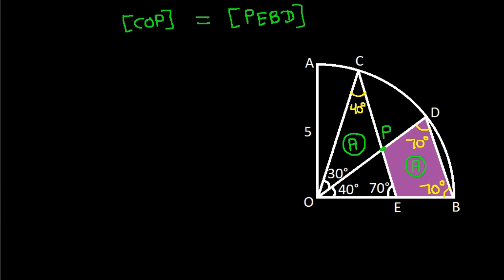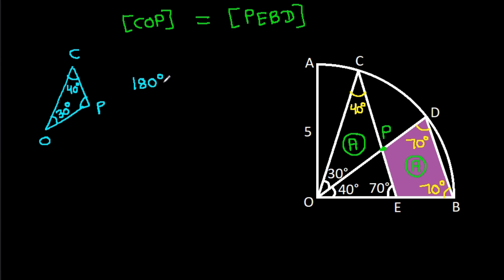Now in triangle COP, this angle is 40 degrees and this angle is 30 degrees. So this angle will be 180 degrees minus 40 degrees minus 30 degrees, that will be 110 degrees. This angle is 110 degrees.